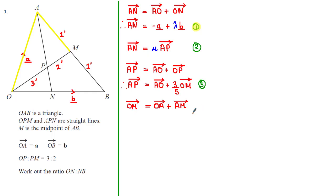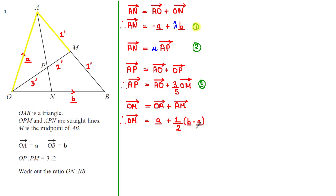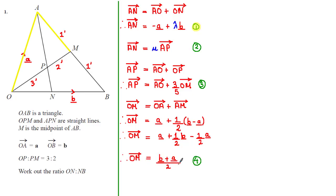We can express OM in terms of a and b: OM = a + ½(b − a), because the vector AM is half of vector AB since M is the midpoint, and AB = b − a. Expanding gives OM = a + ½b − ½a, which simplifies to OM = ½a + ½b, or (a + b)/2.